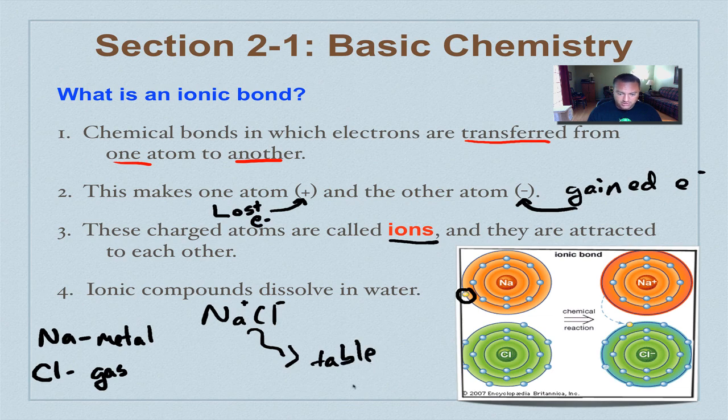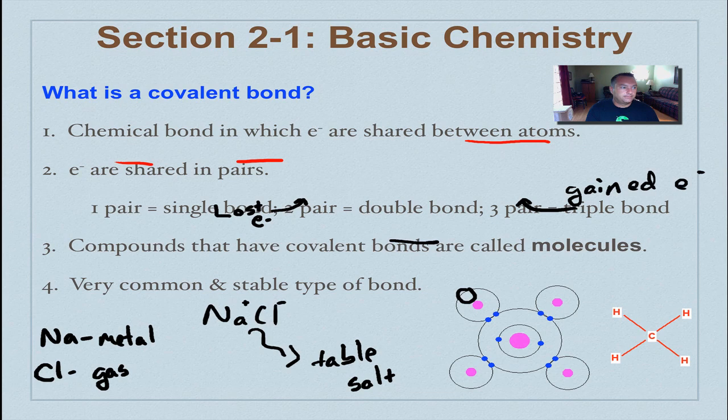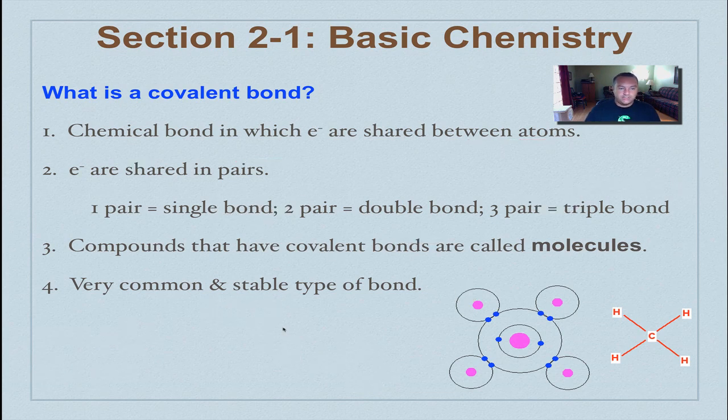So as you can see here, we have a very explosive, highly reactive metal that's going to combine with a poisonous gas. You put those two together and you have table salt, something that we have to have to survive.